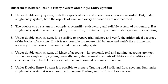The fifth difference: under the double entry system, it is possible to prepare a trading and profit and loss account because a trial balance can be prepared. But it is not possible in the single entry system, because without a trial balance we cannot prepare a trading and profit and loss account.